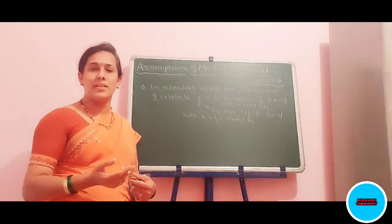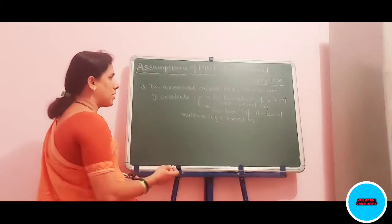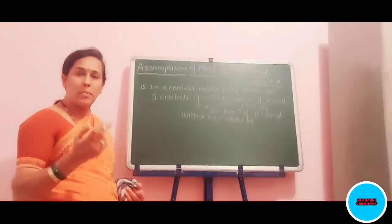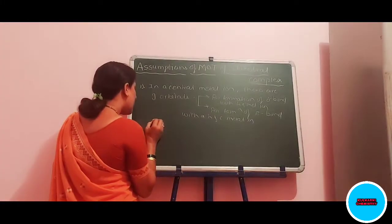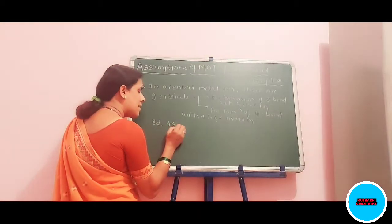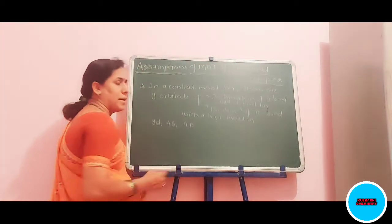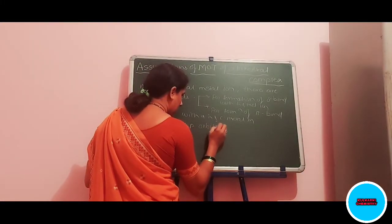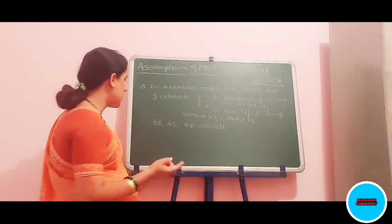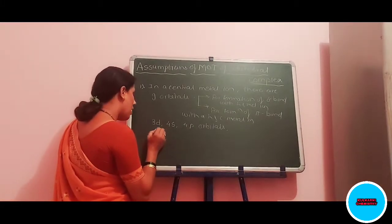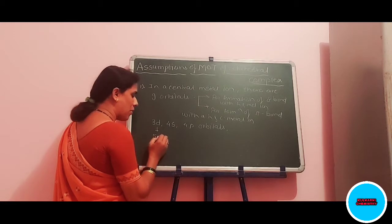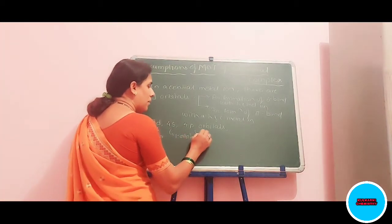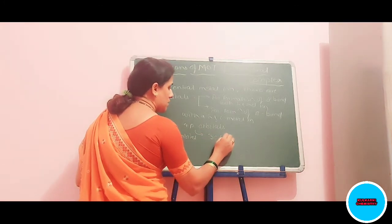The question arises: how many orbitals and which orbitals? For the formation of sigma bonds, we consider orbitals such as 3D, 4S, and 4P orbitals. As you already know, the 3D subshell has 5 orbitals, 4S has only 1 orbital, and 4P has 3 subshell orbitals.